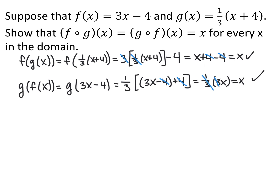For the other direction, g composed with f of x: every time I see an x in g of x, I replace it with 3x minus 4. So I get one-third times the quantity 3x minus 4, plus 4. The minus 4 and plus 4 cancel; then one-third times 3x — the one-third and 3 cancel — leaving x. This is something we'll talk about in 5.2: composites that simplify down to x.